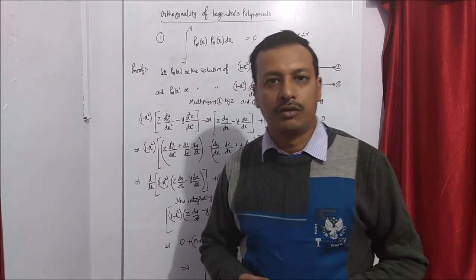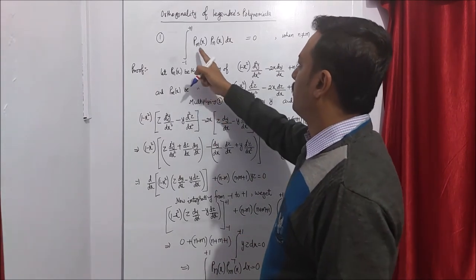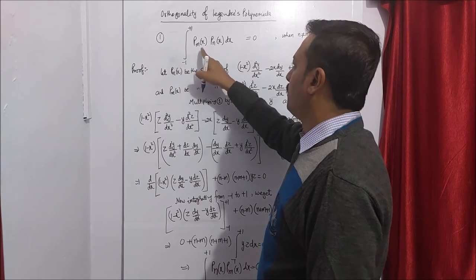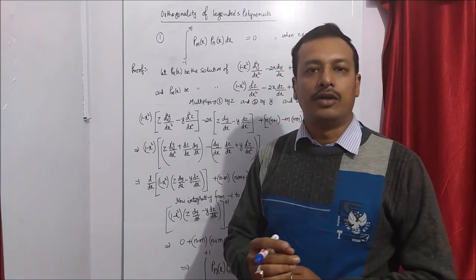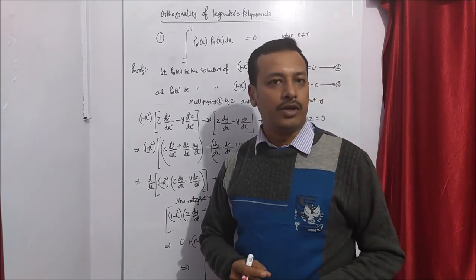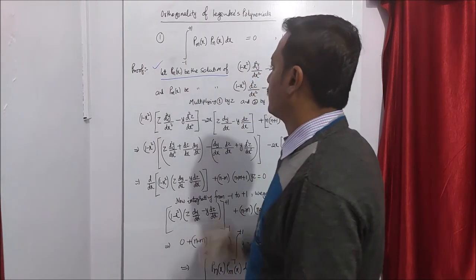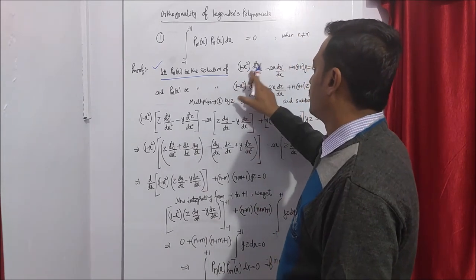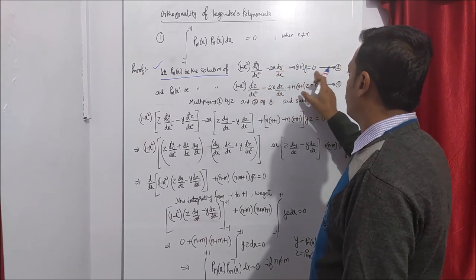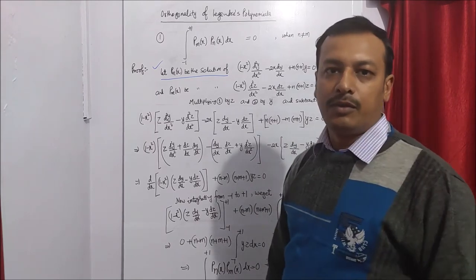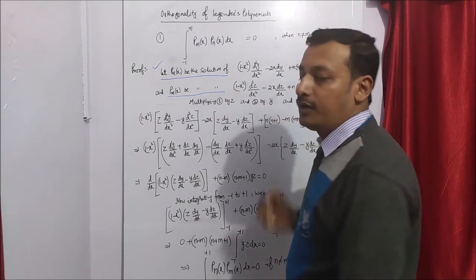We will prove both properties one by one using an easy method. For the first property, integration from minus 1 to plus 1 of Pm(x) Pn(x) dx equals 0 when n is not equal to m. We first assume Pn(x) is the solution of the Legendre differential equation: 1 minus x squared d²y/dx² minus 2x dy/dx plus n(n+1)y equals 0. This is equation number 1.